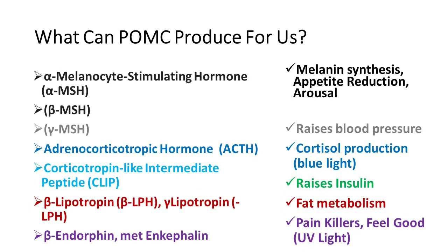CLIP is an insulin secretagogue, meaning it raises levels of insulin. Like cortisol, insulin is demonized but we die without it — it plays vital roles not just for lowering blood sugar but also in the brain and other tissues. Then we've got lipotropins, which are involved in fat metabolism. POMC is highly tied into metabolism and into the leptin-melanocortin pathway, which is extremely important for appetite and regulating the amount of energy in the body.